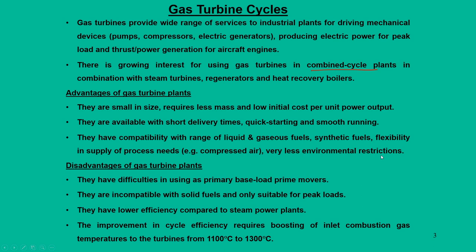However, apart from these advantages, there are some disadvantages as well. Gas turbine units have difficulties as primary energy base load prime movers — although they can be used safely for augmentation or supplying extra energy, they cannot serve the primary requirement because the starting torque is normally less. They are incompatible with solid fuels and are only suitable for peak load requirements.